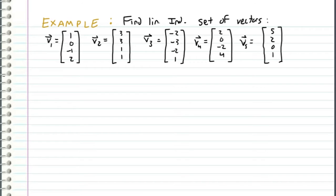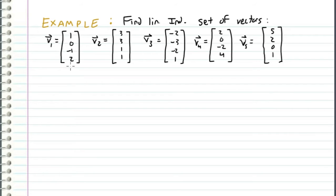In this video, I will be going over an example on how to pick out the linearly independent vectors of a set. So let's say that we have the following vectors, V1 all the way to V5, and they are defined as written. And we want to pick out which vectors are linearly independent.